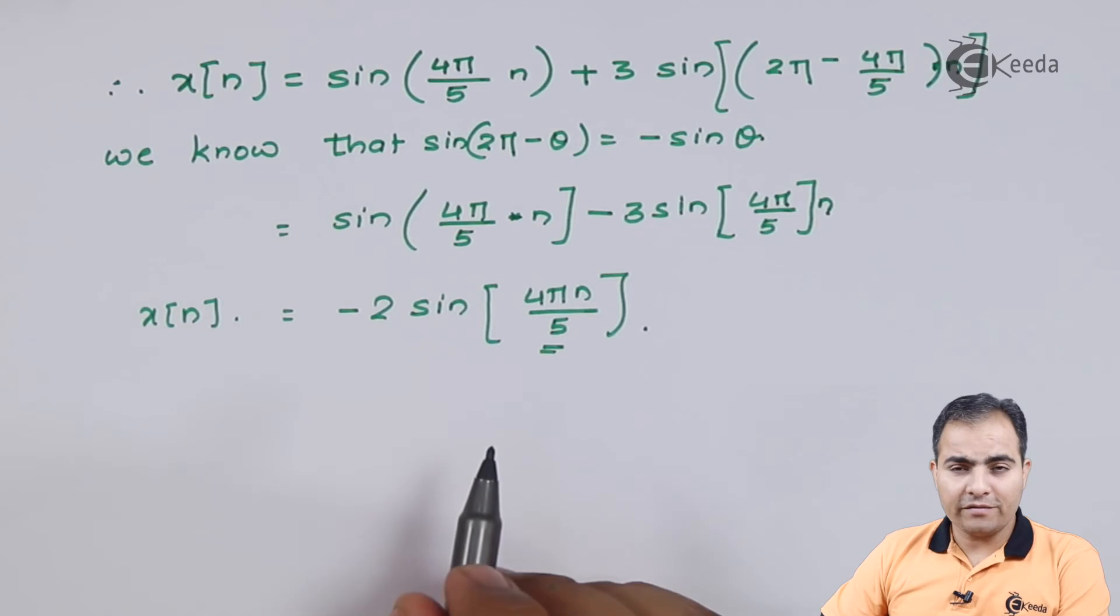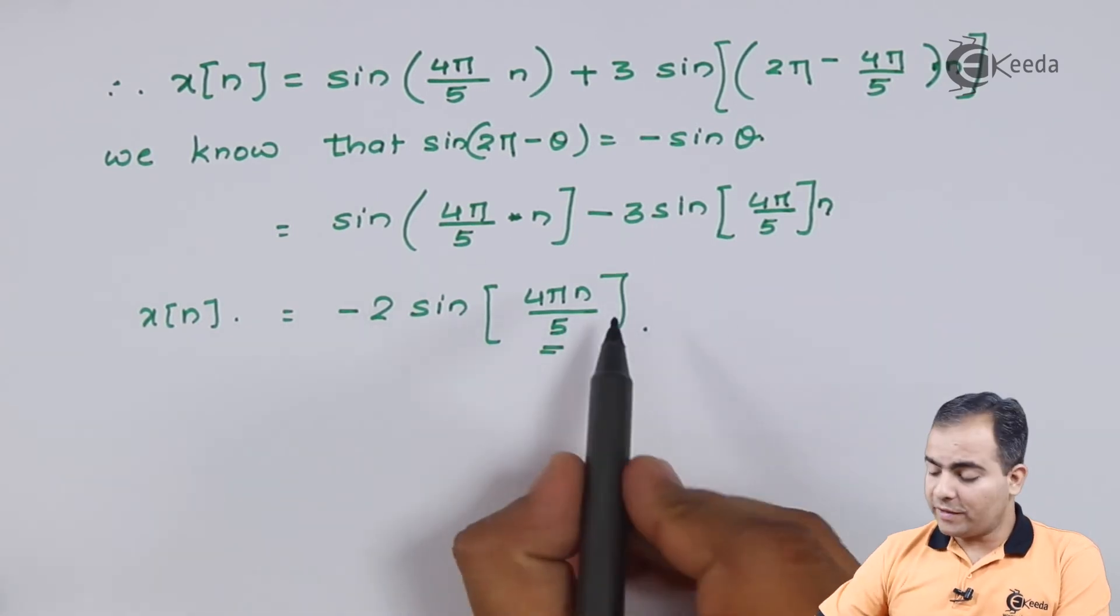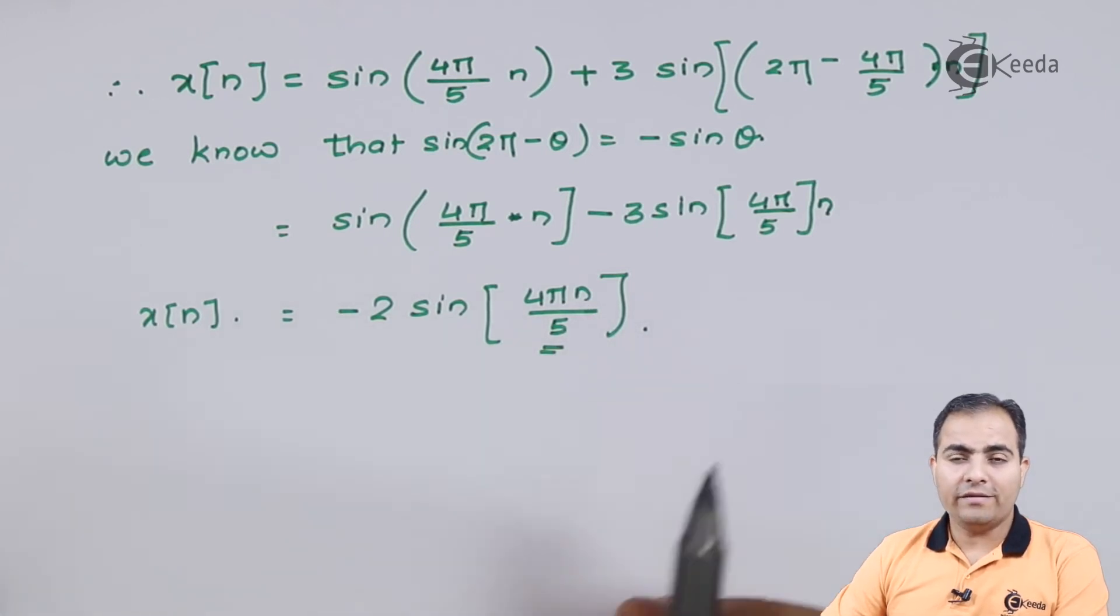This is my discrete time signal. Now what is asked? The folding frequency. How to calculate the folding frequency? Simply I will do the reverse process, replacing this n by t·Fs.